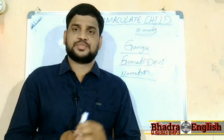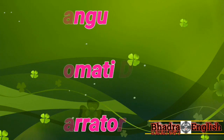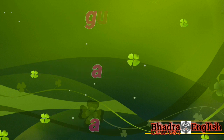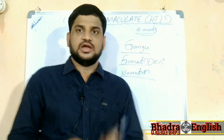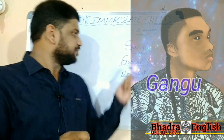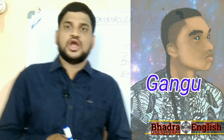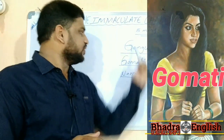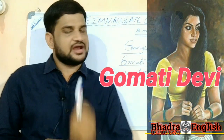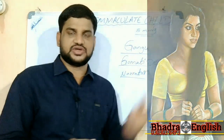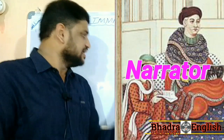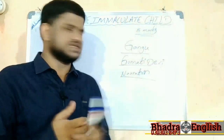In the story 'The Immaculate Child,' there are three important characters: Gangu, Gomati Devi, and the Narrator. These three characters lead the story. The Narrator is the one who tells the story to the readers.